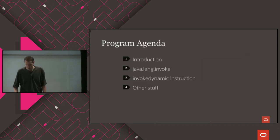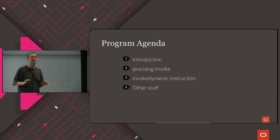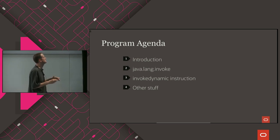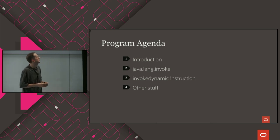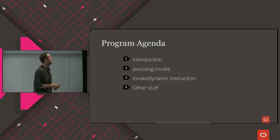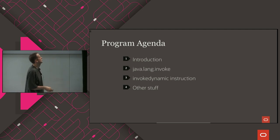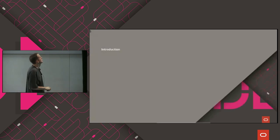Jumping right into the agenda — we have a lot of material to cover in 45 minutes, so we'll go at quite a fast pace, but hopefully not too uncomfortable. We'll give some background information, talk about what dynamic typing actually means and what we need to do to support it, cover the java.lang.invoke API added with JDK 7, the InvokeDynamic instruction itself, and then a bunch of other things in the junk drawer called 'other stuff' towards the end.